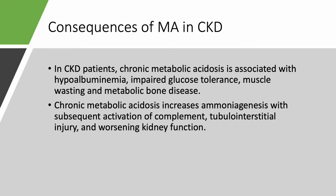When you have chronic metabolic acidosis — the non-anion gap type — you have increased ammoniogenesis, so you need to increase ammonium production to buffer that acid. But this is not good because it will lead to activation of complement. Once complement is activated, you can have tubular interstitial injury and worsening kidney function.